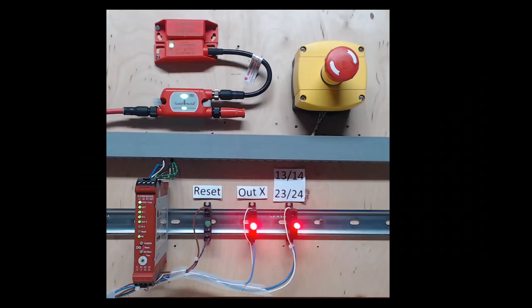Here I have a DG relay configured with a guard link circuit on input 1, an e-stop button on input 2, and I have a reset button, an indicator to show the out X status, and an indicator to show the 13-14, 23-24 safety output status.